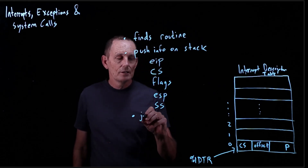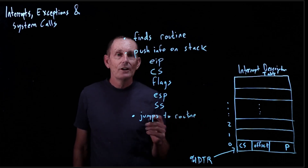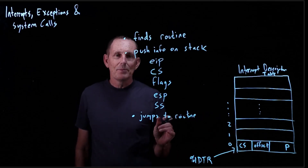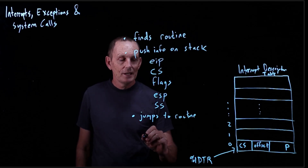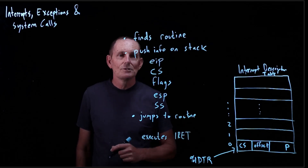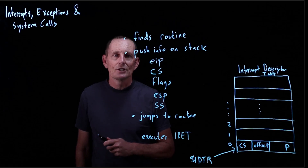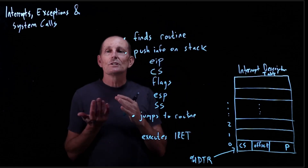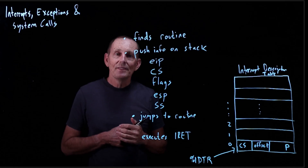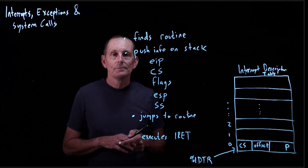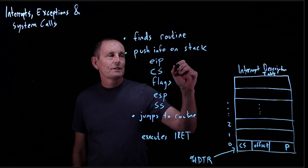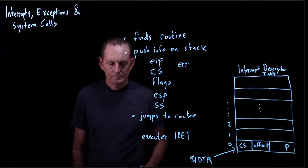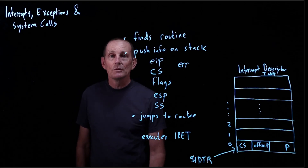Then it jumps to the trap handler — the one referred to from the interrupt descriptor table. The trap handler does its thing, handles the exception however it wants to, and when done, executes the iReturn opcode. The iReturn instruction undoes the stack pushes, pops the information off the stack, goes back to the saved EIP, and switches back to user mode if it was in user mode. One other piece of information pushed on the stack is an error code that provides additional information about the particular exception — for example, for a page fault handler it tells whether the access was a read or a write.